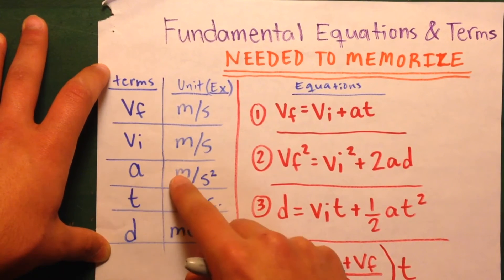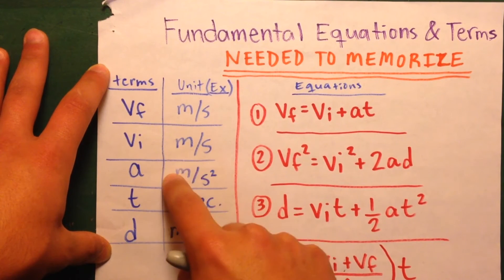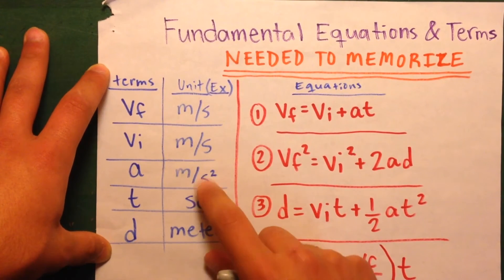A's for acceleration, and an example would be meters per second squared. Always a unit of distance per a unit of time squared.